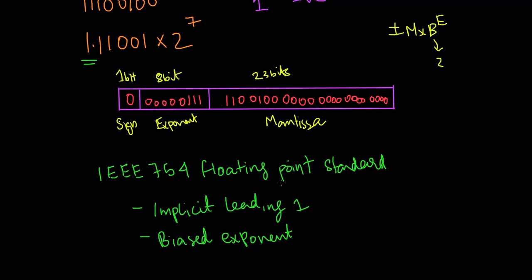Special values in IEEE 754: if the number is 0, the exponent is all zeros. The sign bit indicates positive or negative. If the exponent is all 1s (8 bits all equal to 1) and the fraction is 0, it represents positive or negative infinity. If the exponent is all 1s and the fraction is nonzero, it is a predefined special number (NaN).